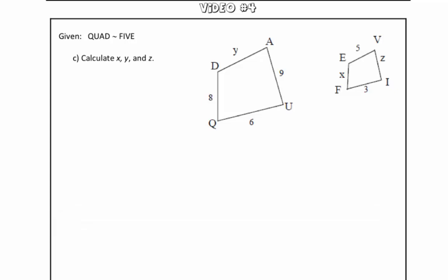In this problem, we are continuing from our two previous problems, so we are given that quadrilateral QUAD is similar to quadrilateral FIVE. And in this problem, we are asked to calculate the lengths of x, y, and z.